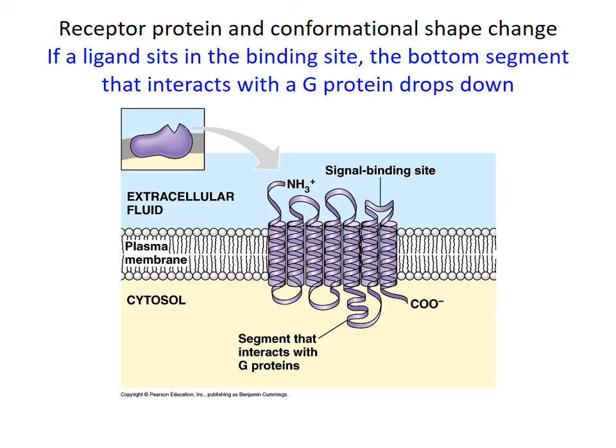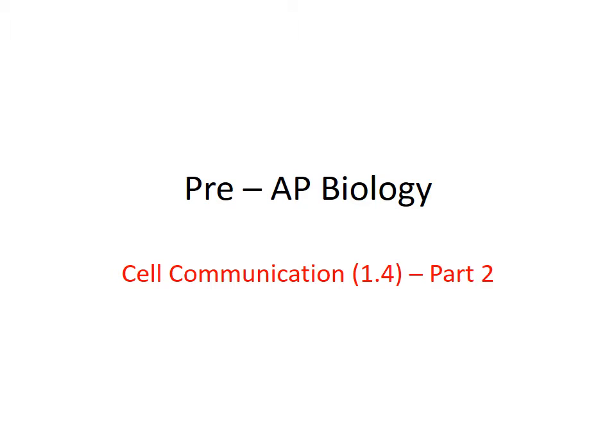A conformational shape change in the receptor protein is going to set off the transduction pathway. The ligand binds at the signal binding site, causing a conformational shape change, which then sets off a transduction pathway. That's the end of part one. There's a little diagram on the bottom of your notes there looking at reception, transduction, and response. Now let's go ahead and go into part two, looking a little more at these specific receptor proteins.